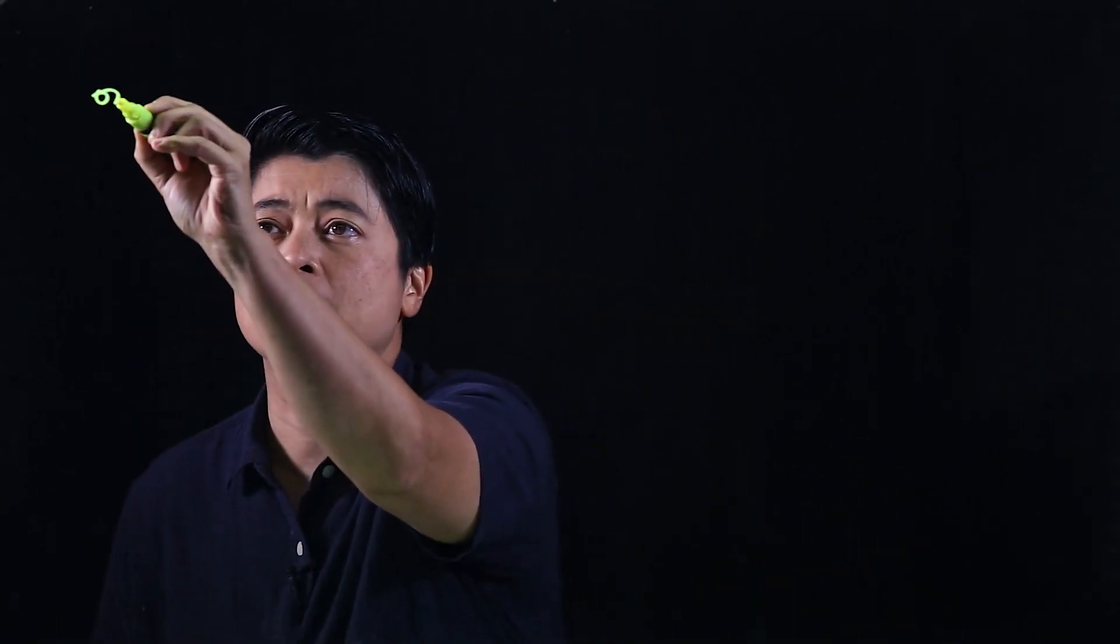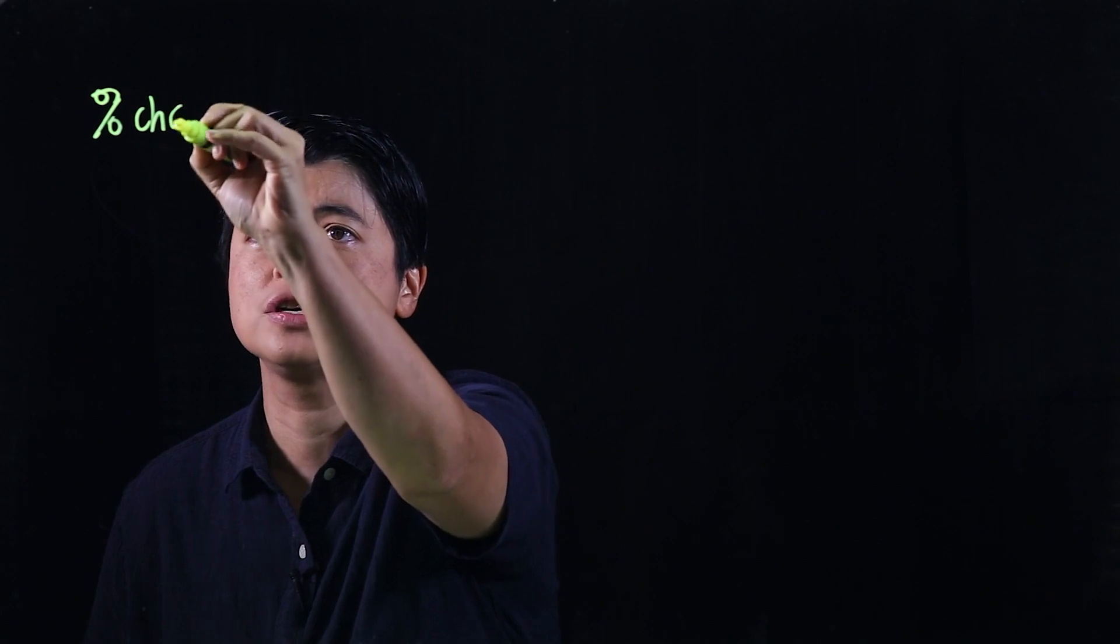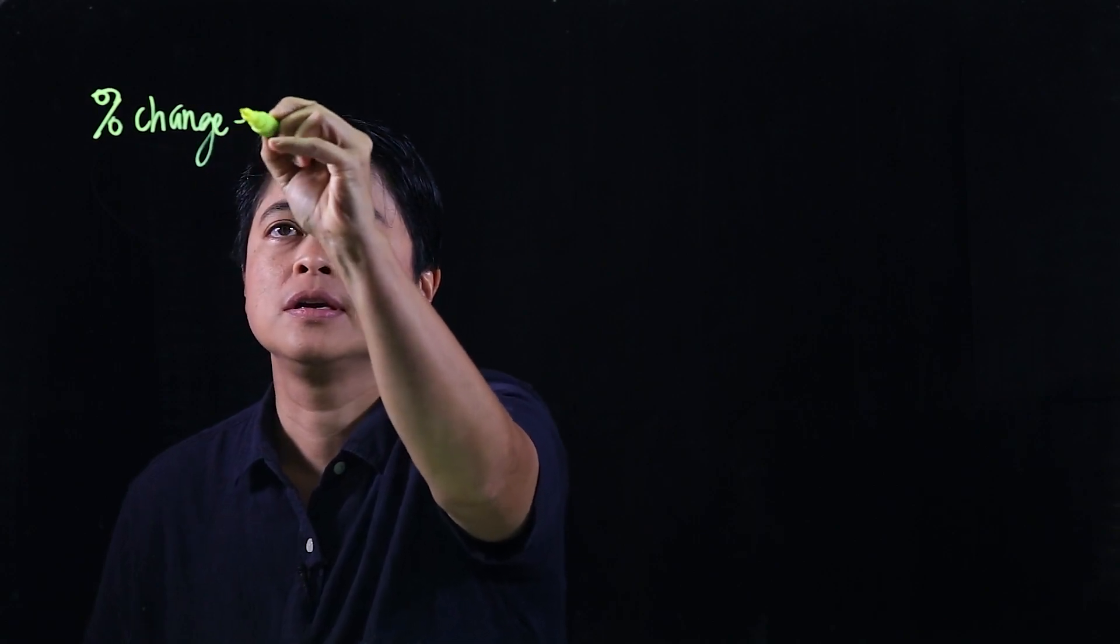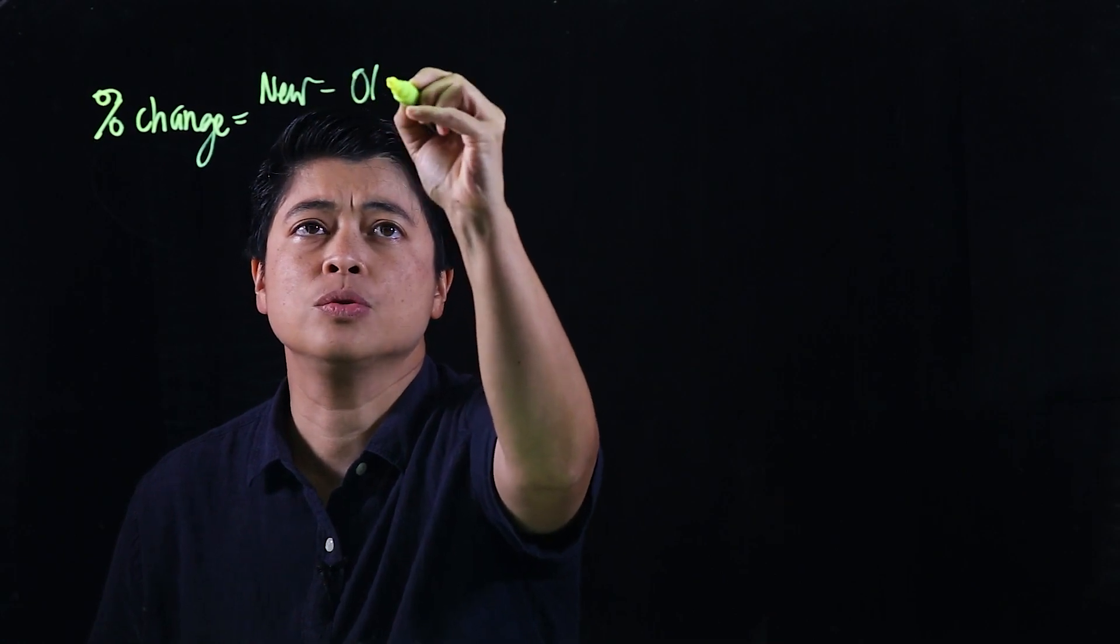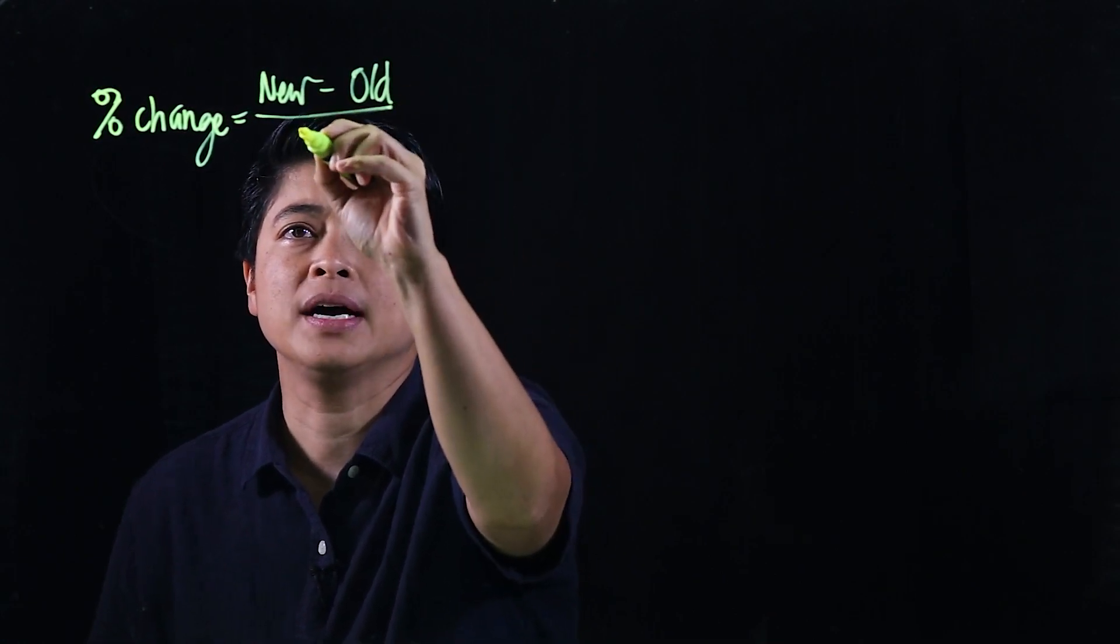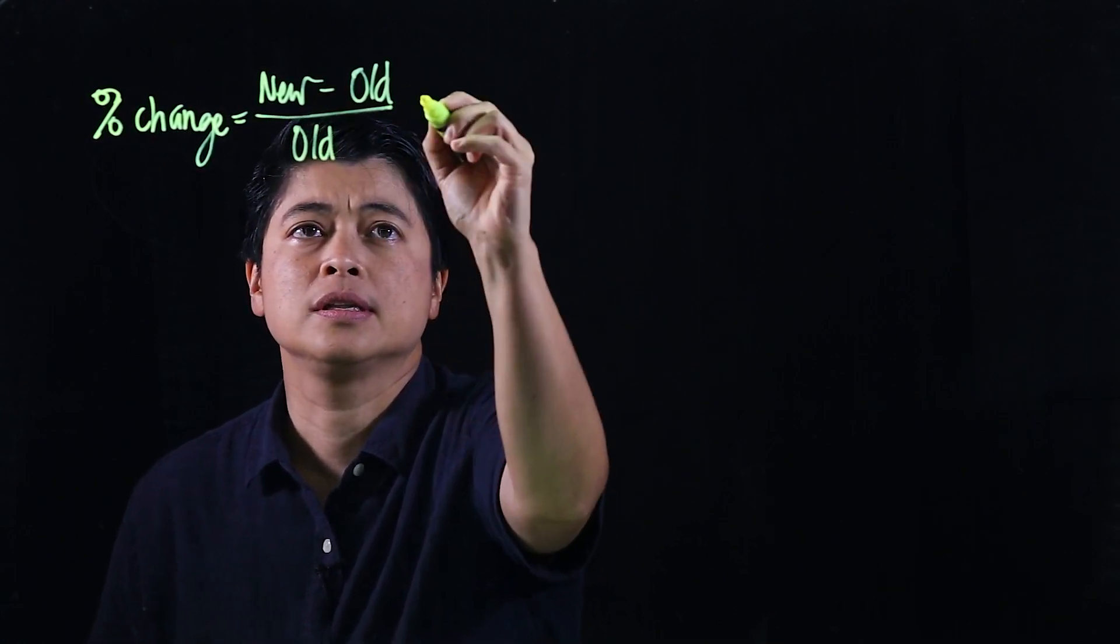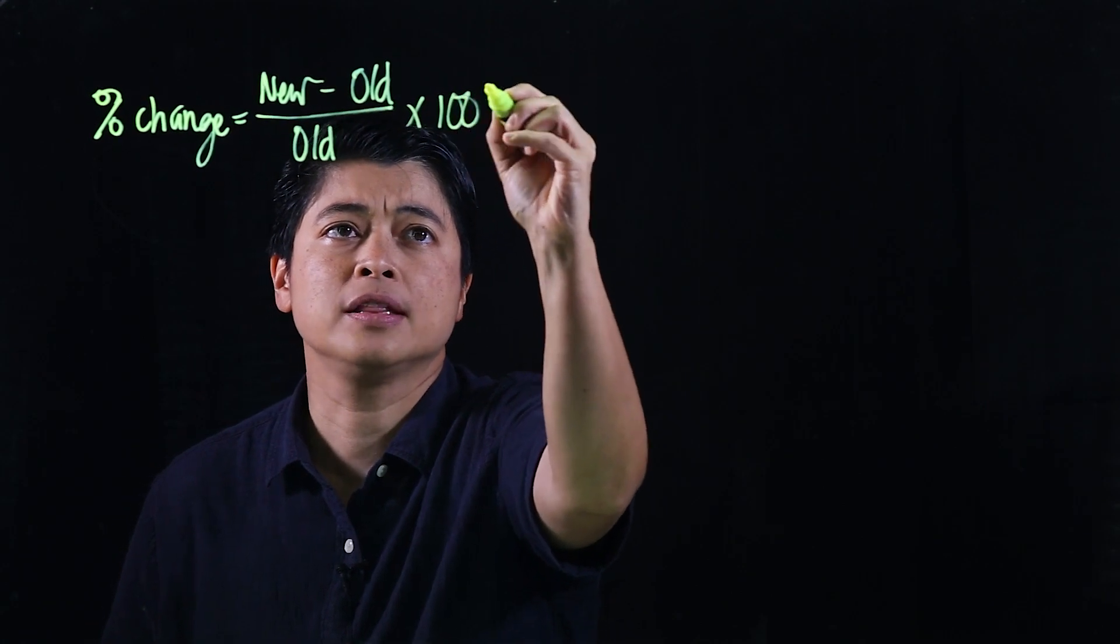Chapter 4, Lesson 2 is percent change. Okay, so here I'll give my formula. Percent change is new minus old divided by old times 100 percent.